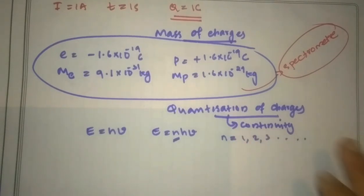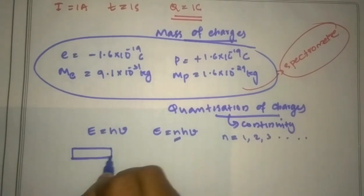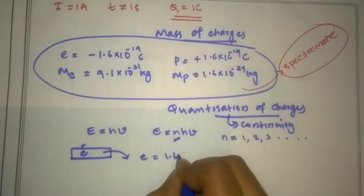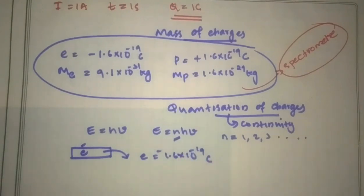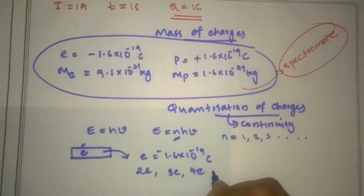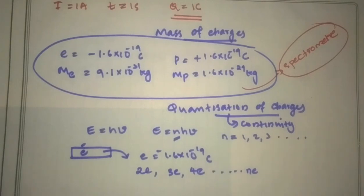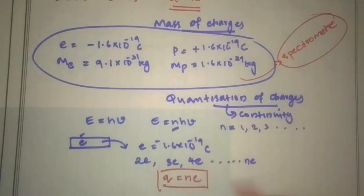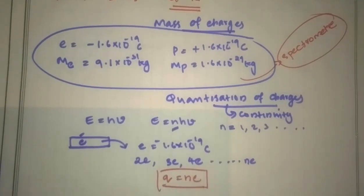I say quantization is quantized. Now I have a body — there is an electron. The electron value is 1.6 × 10 rise to minus 19, negative 1.6 × 10 rise to minus 19. Now we have 2 electrons, 3 electrons, 4 electrons and so on, but the last one is ne. So we have the equation Q = ne. This is the quantization equation — the charge is an integral multiple of the electron charge.